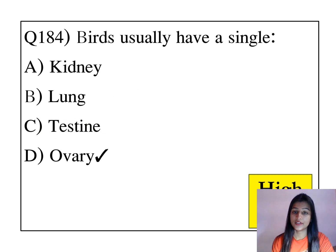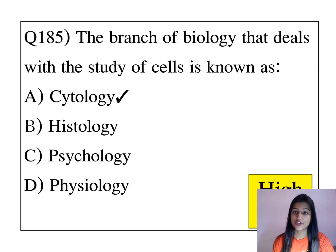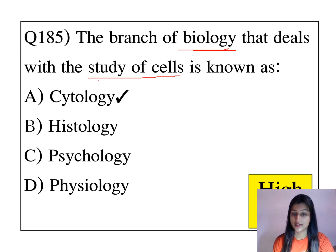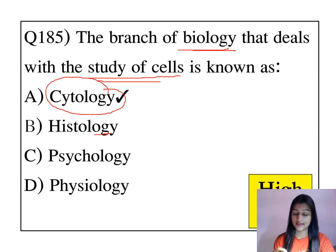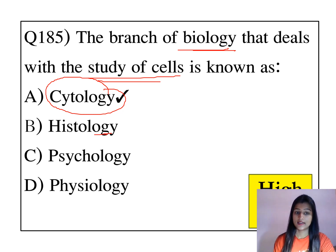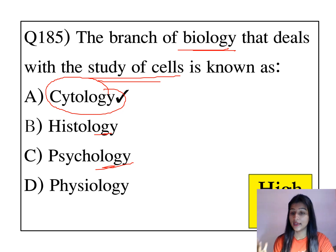Words usually have a single ovary. The branch of biology that deals with the study of cells — histology is the study of tissues and cells. Psychology is the study of mind and behavior.